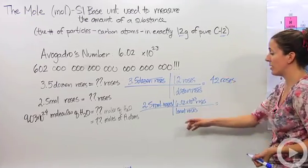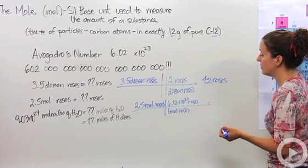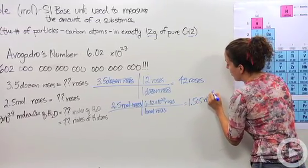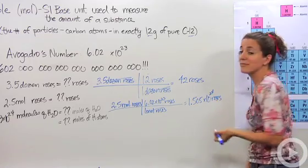If we multiply this number together, 2.5 times 6.02 times 10 to the 23rd, we get 1.505 times 10 to the 24th roses. That's a lot of roses.